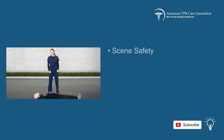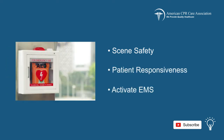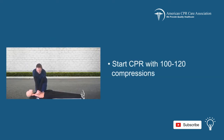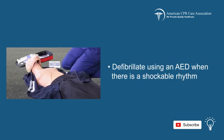The first step in the adult chain of survival is to check for scene safety, patient responsiveness, and then activate EMS. Next, start CPR with 100 to 120 compressions and watch for complete chest recoil. Then, defibrillate using an AED when there is a shockable rhythm.